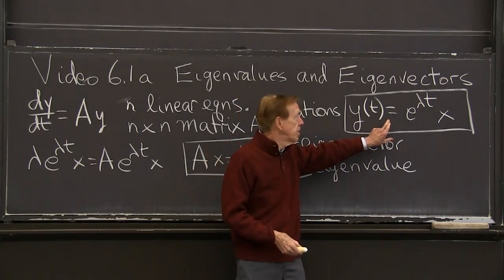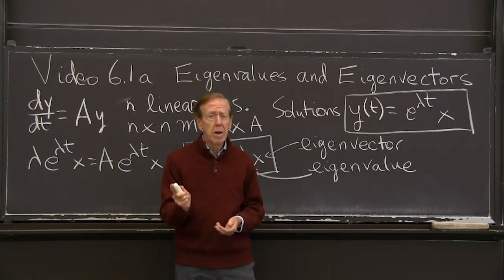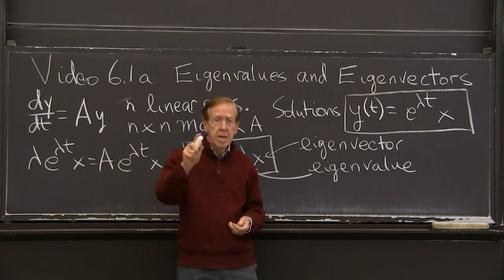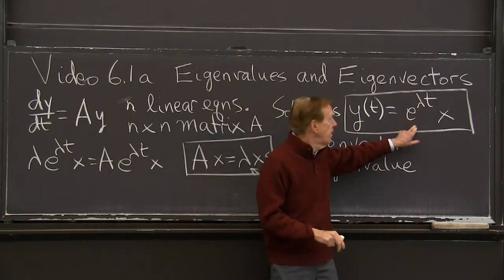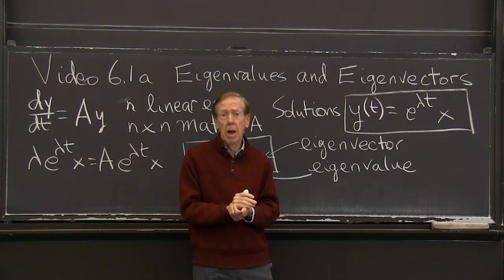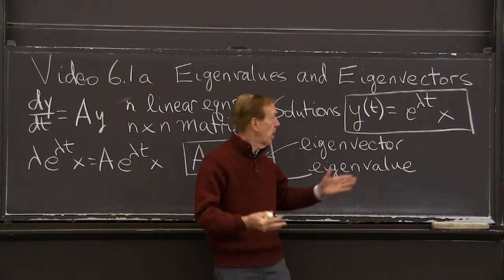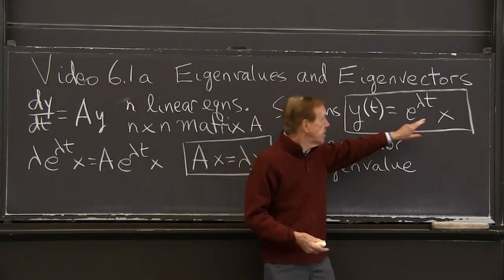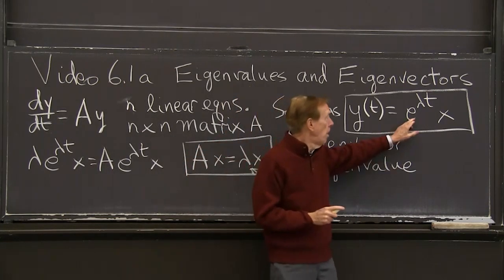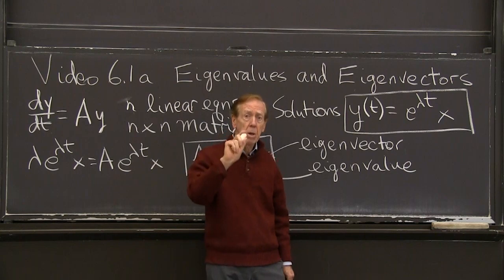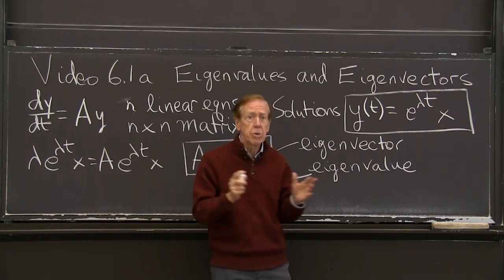And now I can tell you right away where eigenvalues and eigenvectors pay off. They come into the solution. We look for solutions of that kind. When we had one equation, we looked for solutions just e to the st. And we found that number s. Now we have e to the lambda t. We changed s to lambda, no problem, but multiplied by a vector. Because our unknown is a vector. This is a vector. But that does not depend on time. That's the beauty of it. All the time dependence is in the exponential, as always. And x is just multiples of that exponential.